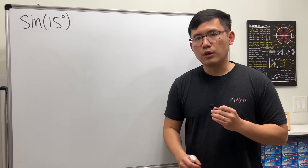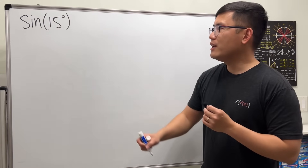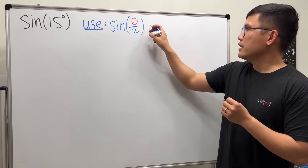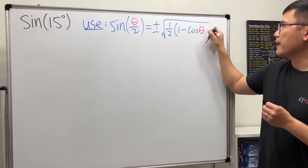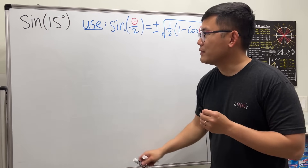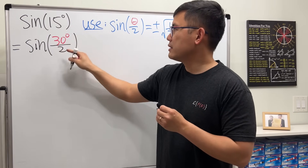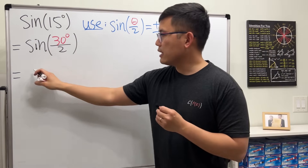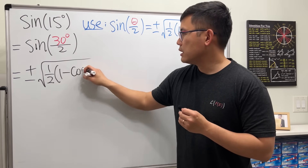For the second way: 30 degrees is a special angle, and if we divide 30 by 2 we get 15 degrees, so we can use the half-angle formula for sine. The formula is: sine of (θ/2) = ±√(½ · (1 − cos θ)). Keep in mind there's a plus or minus depending on the quadrant. We write this as sine of (30°/2), so the angle θ is 30°. We plug in: ±√(½ · (1 − cos 30°)).